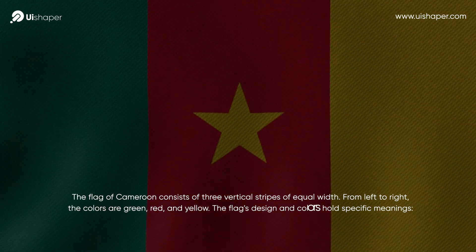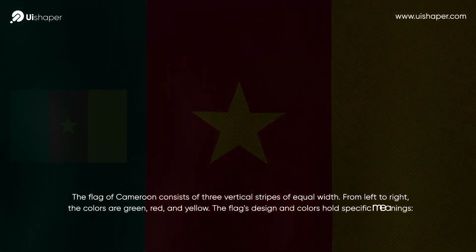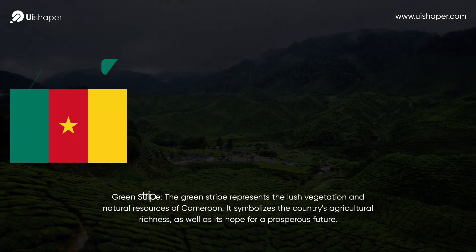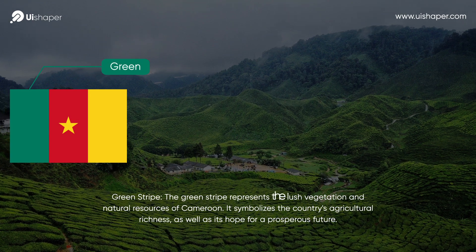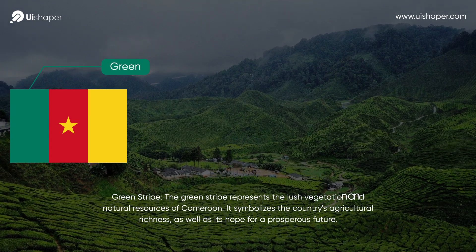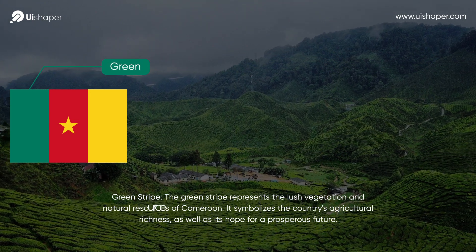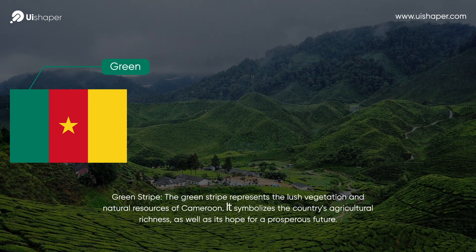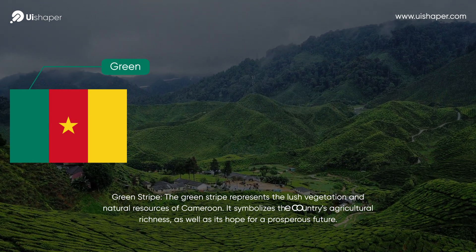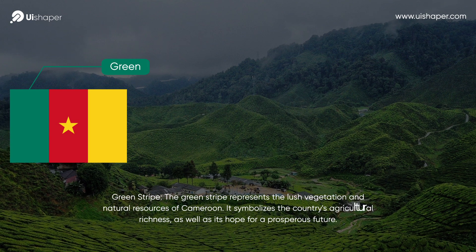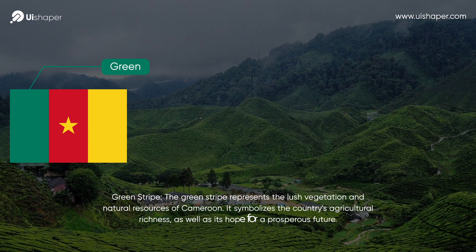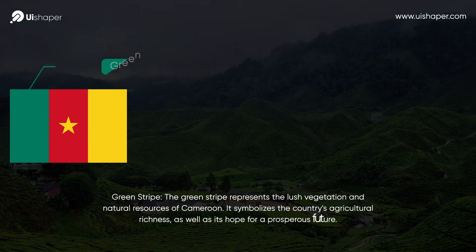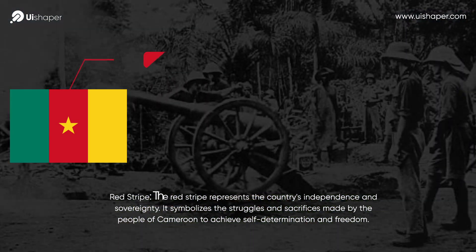The flag's design and colors hold specific meanings. The green stripe represents the lush vegetation and natural resources of Cameroon. It symbolizes the country's agricultural richness, as well as its hope for a prosperous future.